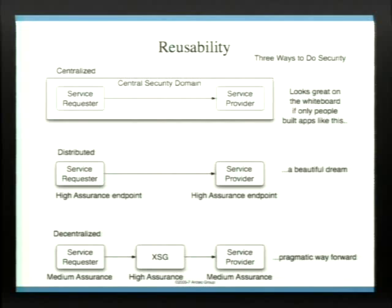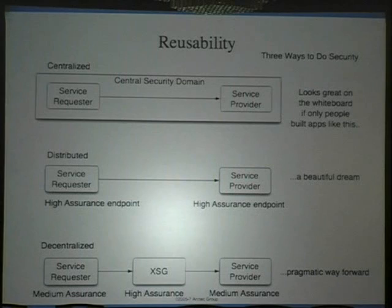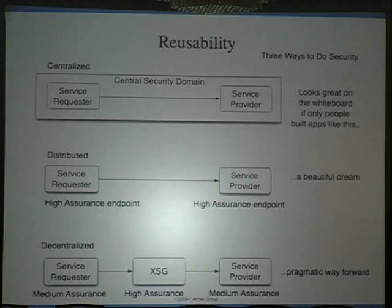There are really three ways you could do security. You can build a centralized system where your service requester and service provider are in the same exact domain — sort of like the mainframe model. That works great, except people stopped building systems like that about 20 or 30 years ago. You can have a distributed system where you have high-assurance service requesters talking to high-assurance service providers, but that's really only a beautiful dream.